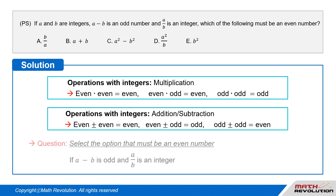We are required to select the option that must be an even number if A minus B is an odd integer, and A over B is an integer. This is a level 40 question that is pretty tricky. Remember the question itself and the solving process.